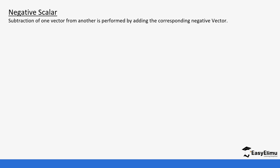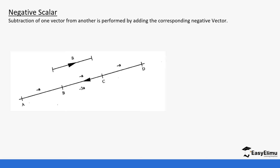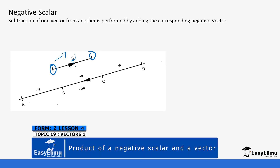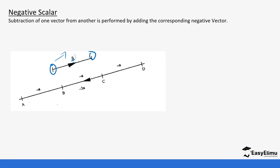Subtraction of one vector from another is performed by adding the corresponding negative vector. If we look at this vector from point A to point D — if you move from this point to this point, the vector is going to be positive, moving in the right direction. If the arrow is inverted into the opposite direction, it becomes negative. If you move from A to B going against the arrow or against the direction, it becomes negative.